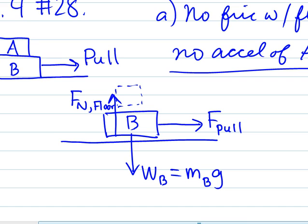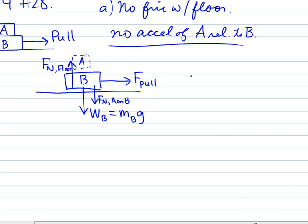And then we're also going to have a normal force from block A pushing down on B. This will be F_n, and we'll say that this is A acting on B. Okay, now there's one more force, but before we draw that, we need to go and do block A. So let's do that.